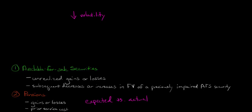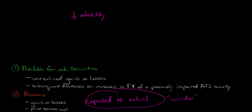Now, that's assuming, of course, that the difference isn't so big that it gets outside what we call the corridor and triggers corridor amortization, in which case the amount that gets outside this corridor could affect pension expense — and we talk about that in another video. But generally speaking, the difference between expected return and actual return on the pension plan assets is going to flow through other comprehensive income.